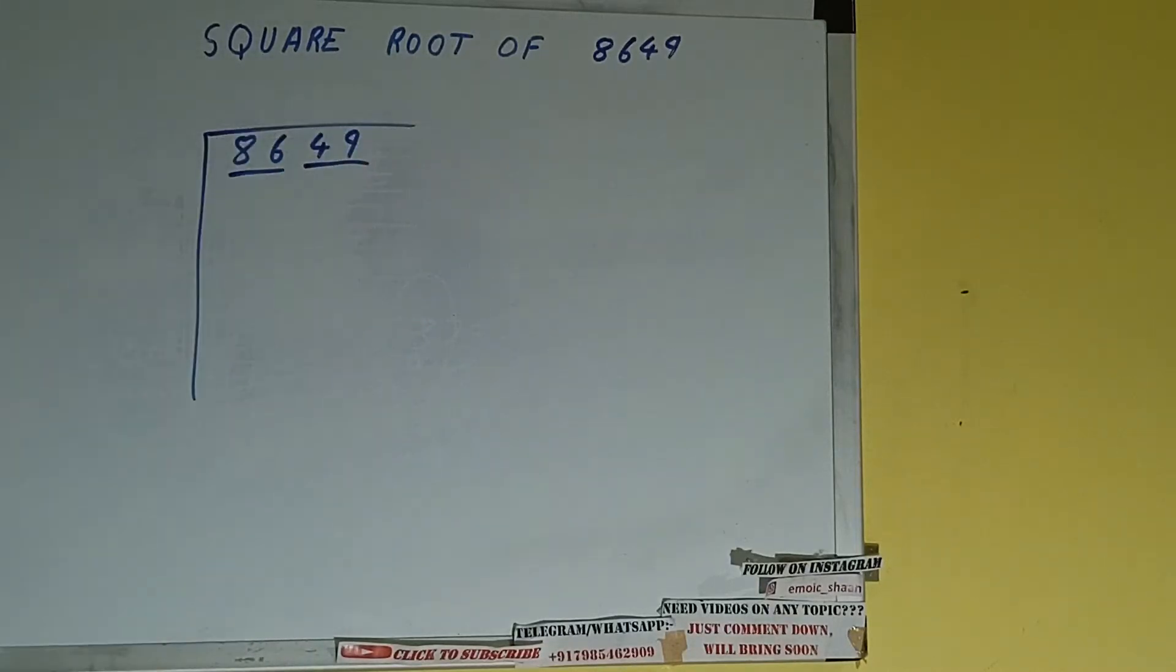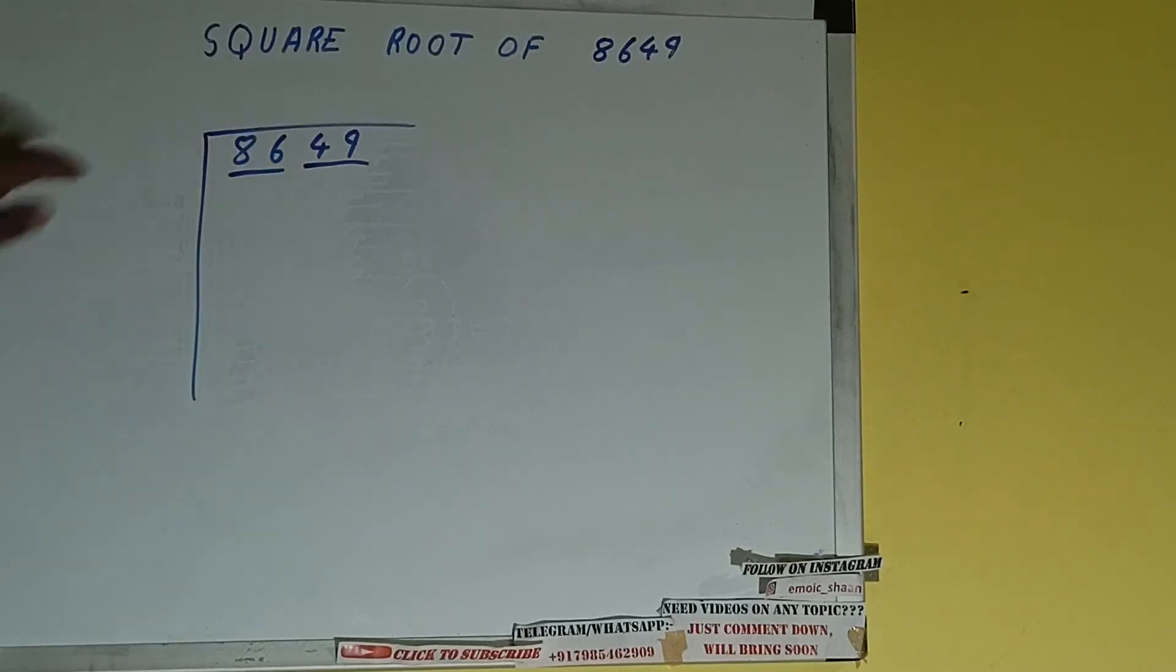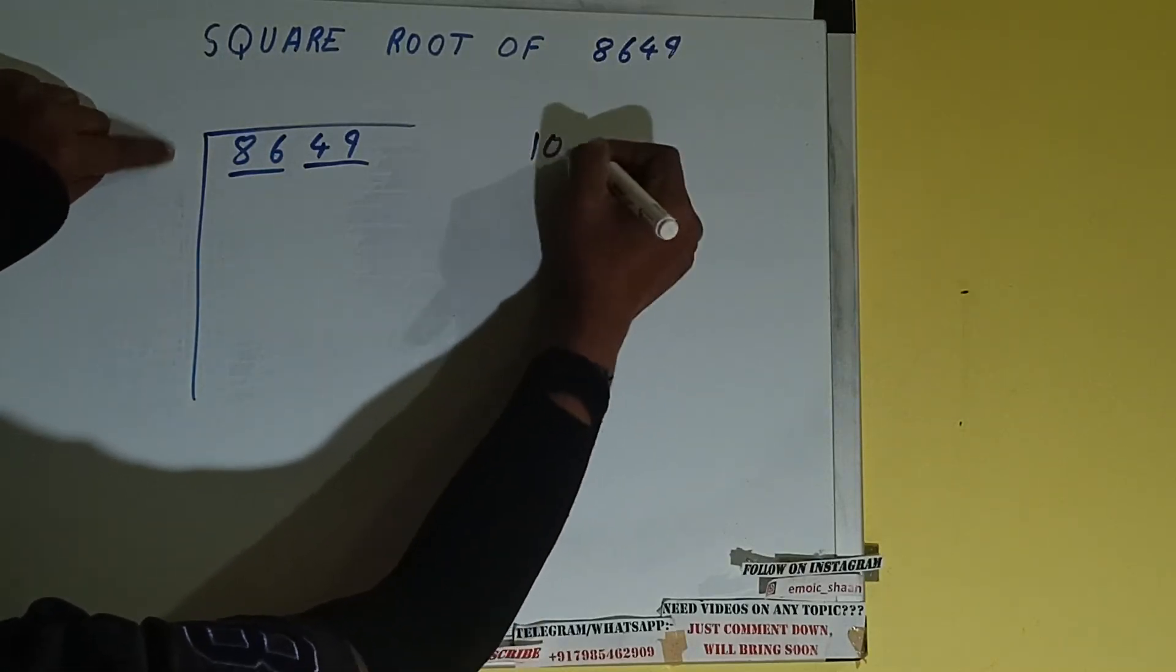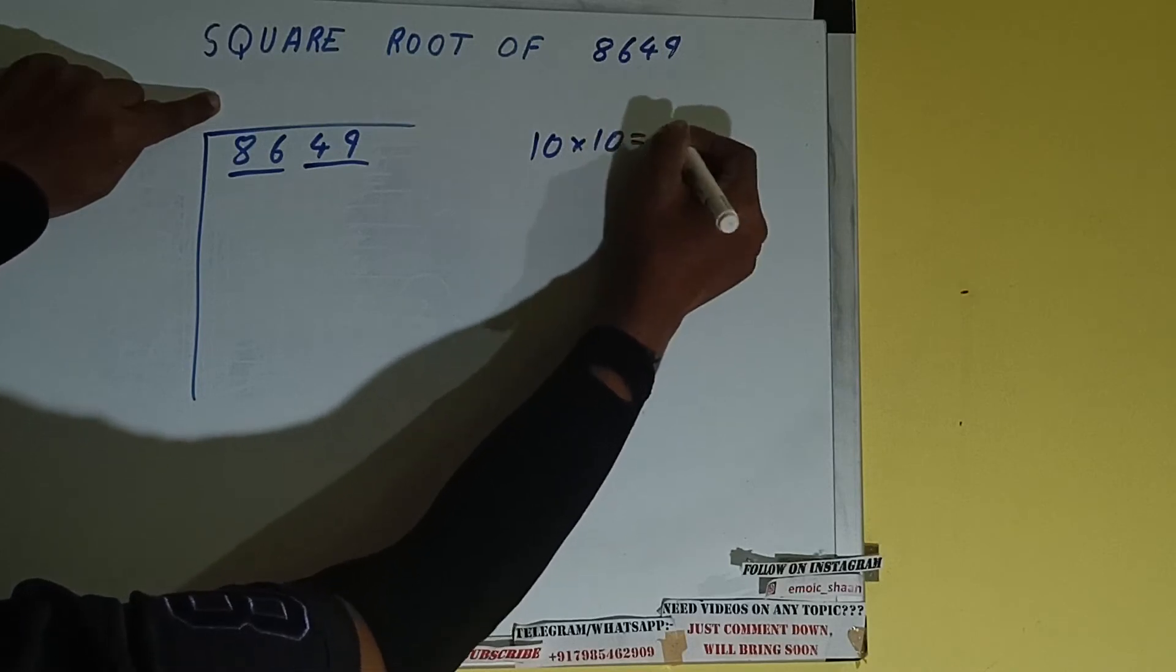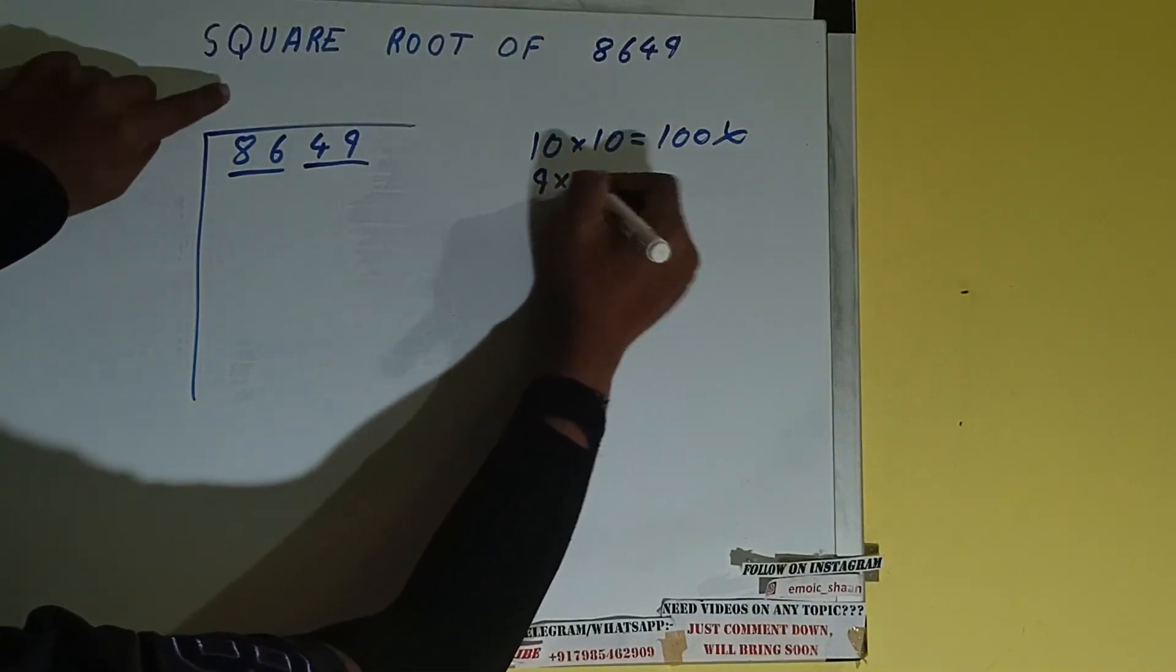First we'll divide this 86 and then we'll bring down the other pair. The rule is whatever number we write here we have to write here also. So if we write 10 here and 10 here it will be 100, which is greater than 86, so we cannot take it.